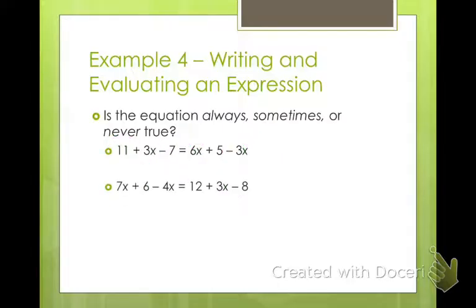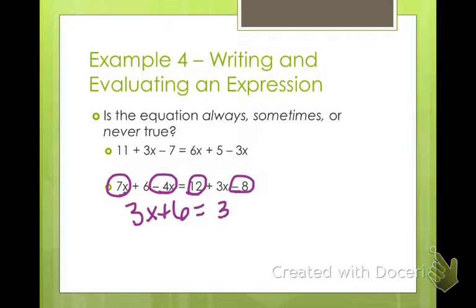What about this one? I'll help you out with this one too. Over here, I can combine 7X and negative 4X. So 7 minus 4 is 3X plus 6. This one, I have 12 and negative 8. Combine like terms. I have 3X plus 4. Is that ever going to be true? Again, no, it will never be true.